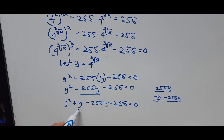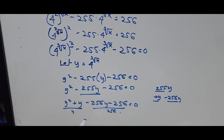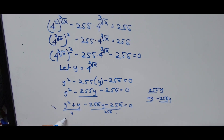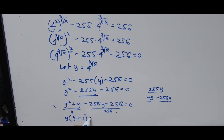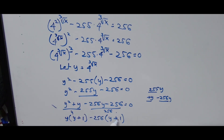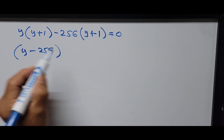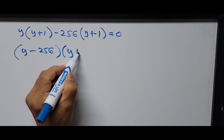Now if you notice the terms here, common here is y, and the terms over here, common is 256. So we're using factoring by grouping. So this equation can be factored out like this: factoring out y gives y times the quantity y plus 1, minus factoring out 256, that is 256 times the quantity y plus 1. Since we're factoring out 256 and this is negative, negative times negative becomes positive, that's plus 1, equals 0. Simplifying the equation further, this is now y minus 256, times y plus 1, equals 0.